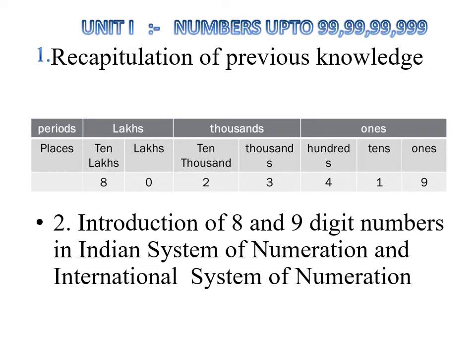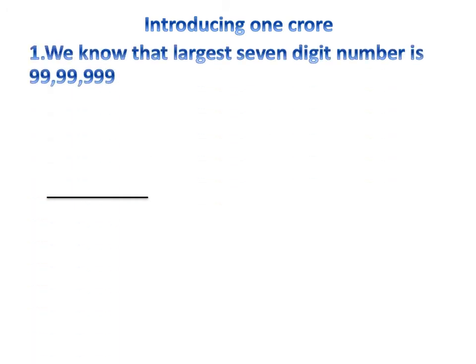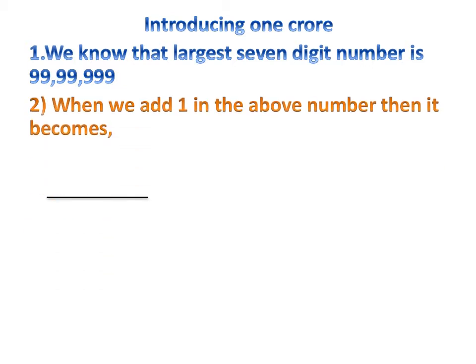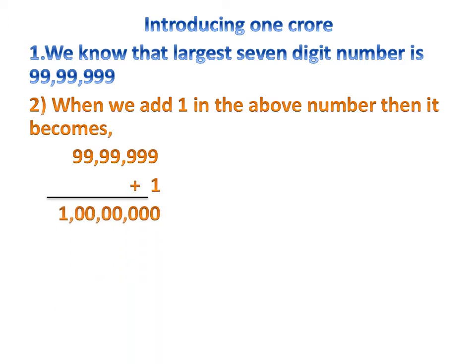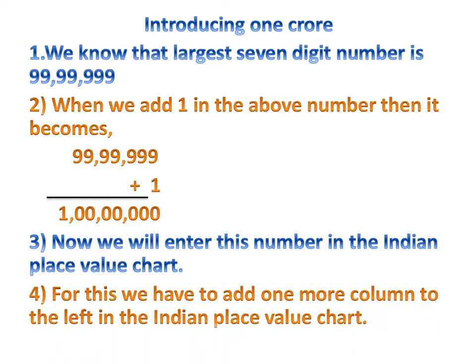Today I introduce eight and nine digit numbers in the Indian system of numeration. First, I am introducing one crore. We know that the largest seven digit number is ninety-nine lakh ninety-nine thousand nine hundred and ninety-nine. When we add one to this number, it becomes a new number. Are you able to read it? Let's see — the seven digit number now becomes an eight digit number.